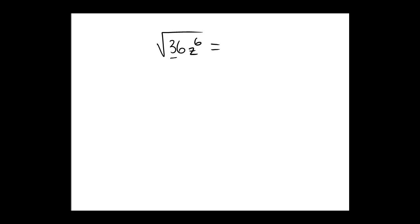what is the square root of 36? Well, the square root of 36 is 6. What is the square root of z to the 6th? Well, z with half as many copies. So half of 6 is 3. Final answer? 6z cubed.